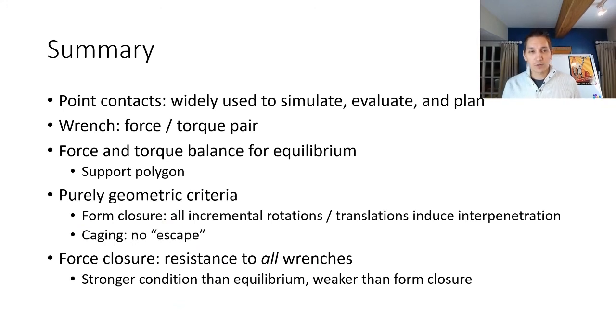In summary, we talked about point contacts. We talked about wrenches and force and torque balance. And we talked about some geometric criteria, form closure as well as force closure, to try to come up with robust grasps. All right, that will be it for this time. I will see you in the next lecture. Bye-bye.